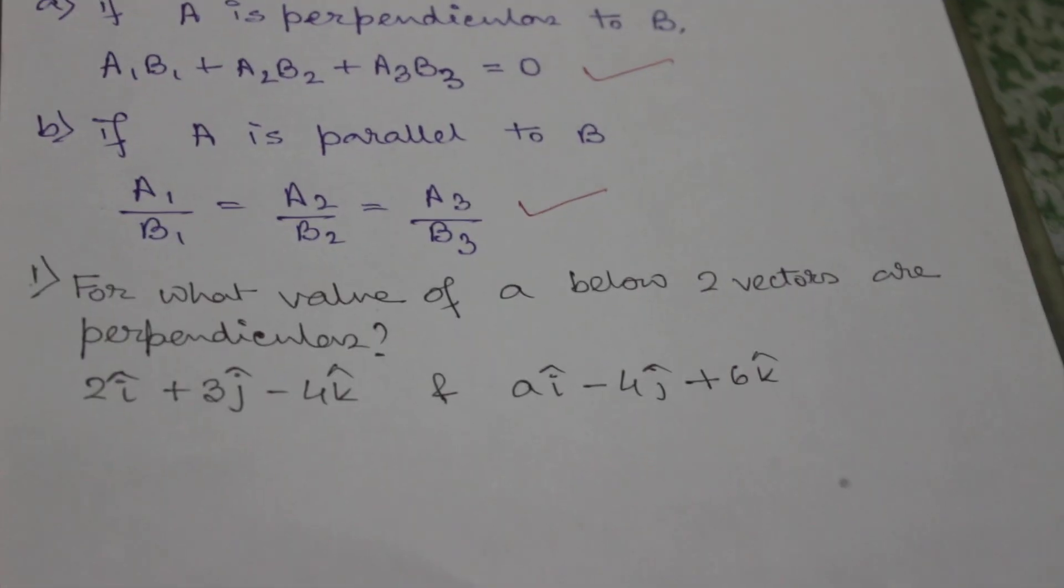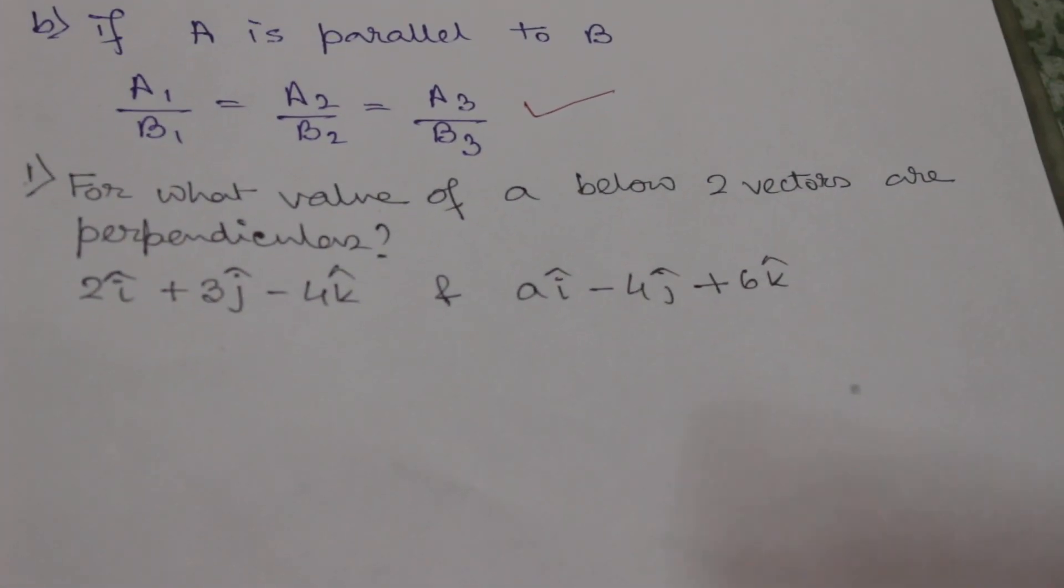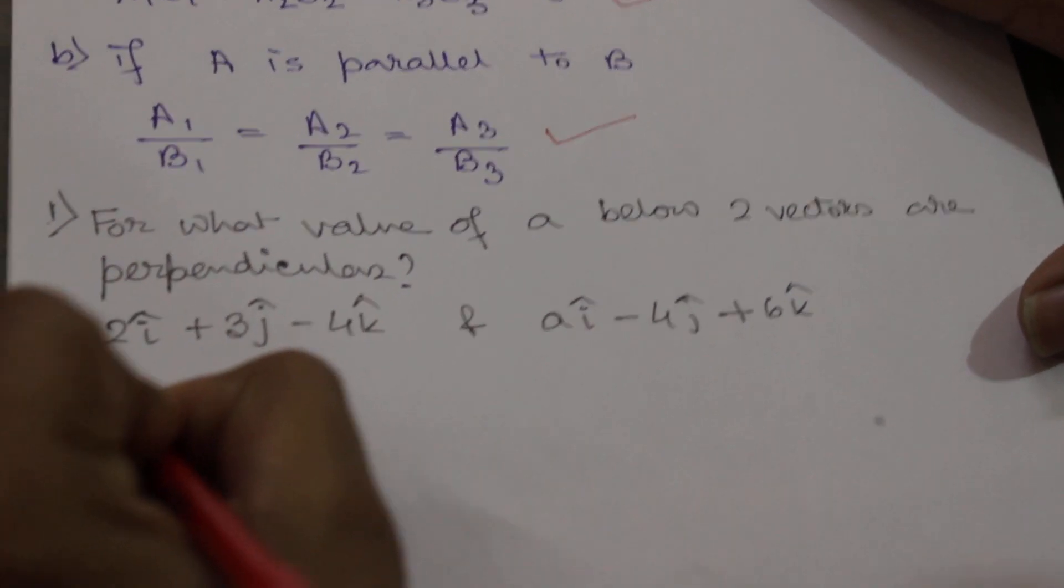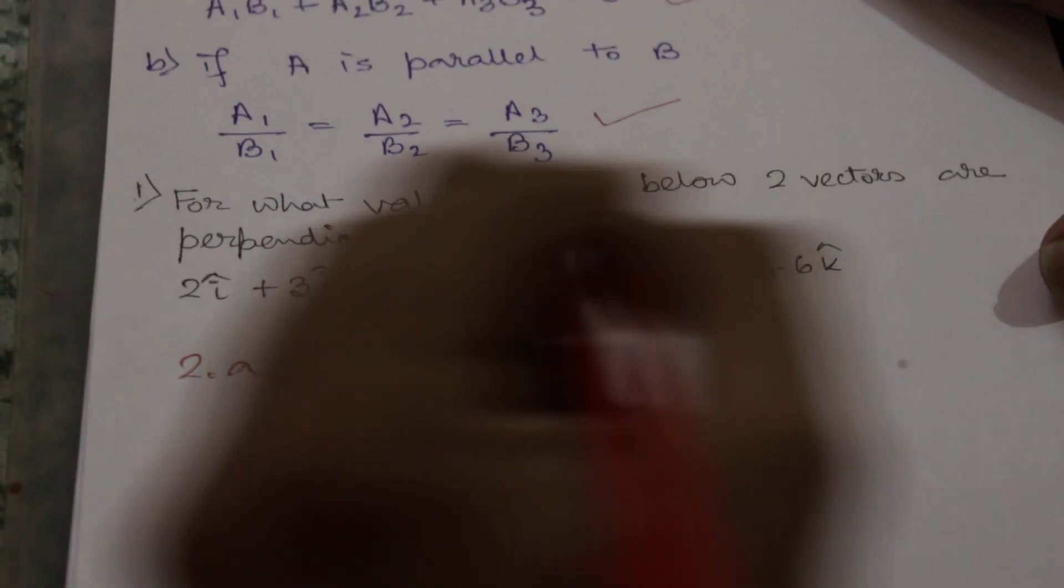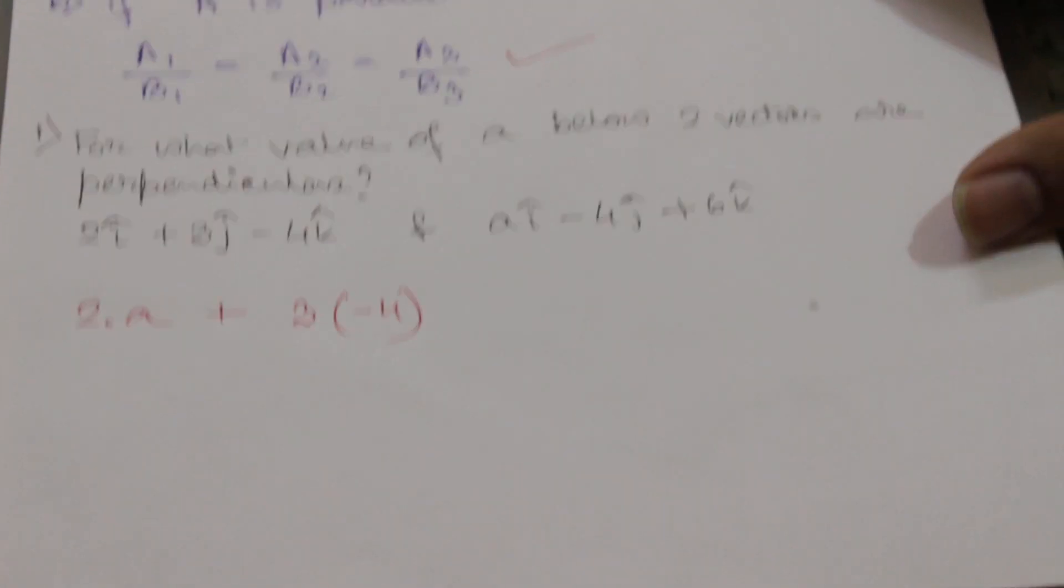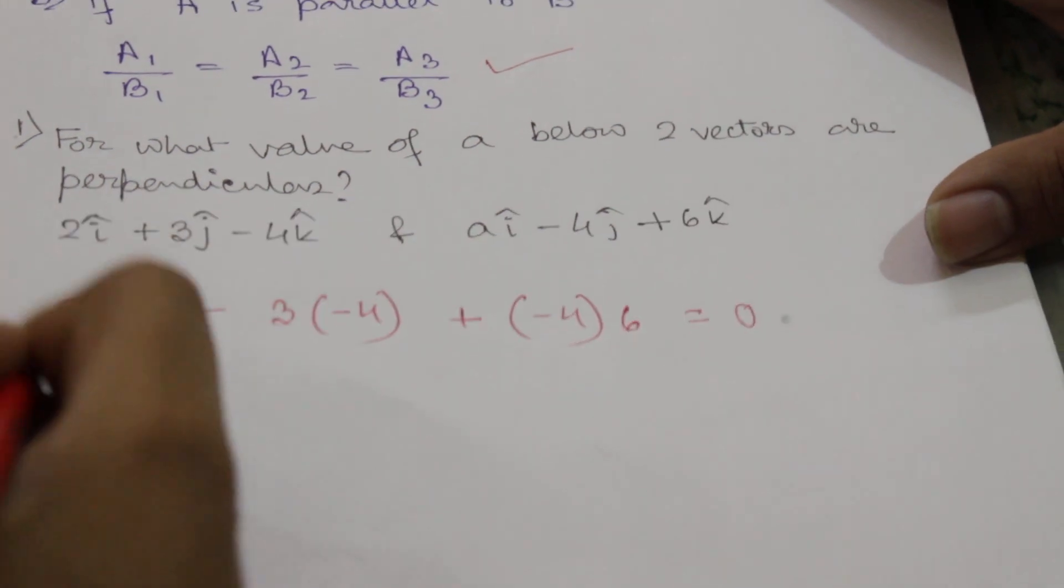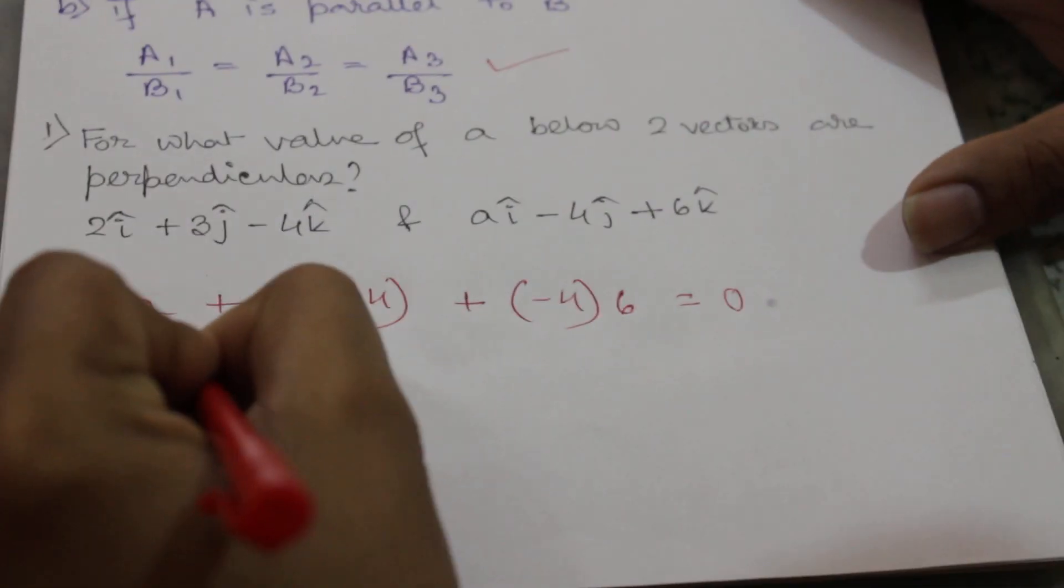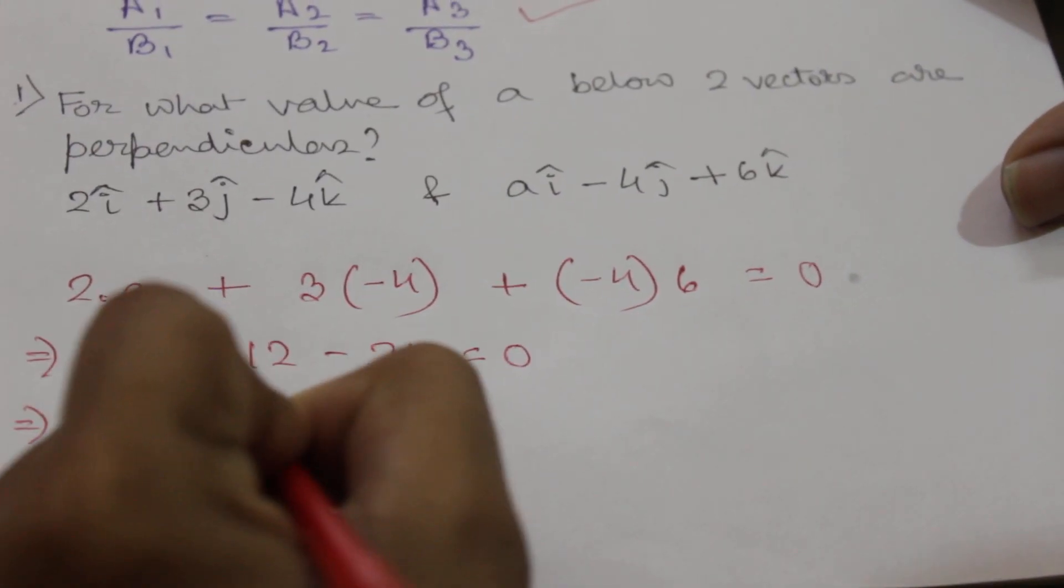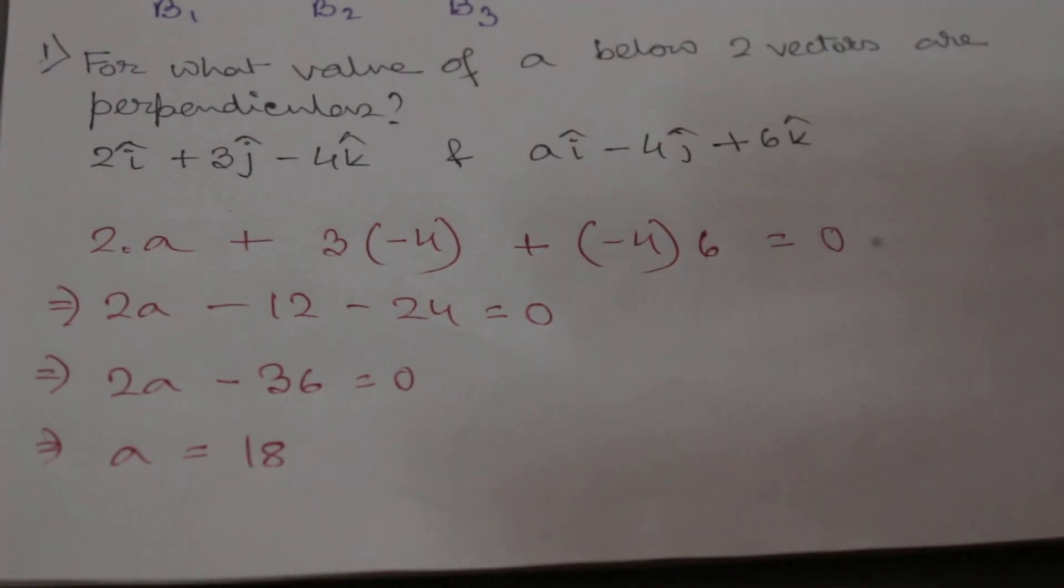These two vectors - that means their dot product will be zero. So it will be 2 into a plus 3 into minus 4 plus minus 4 into 6, that will be equal to zero. So 2a minus 12 minus 24 equals zero, 2a minus 36 equals zero, so a will be equal to 18. Understood?